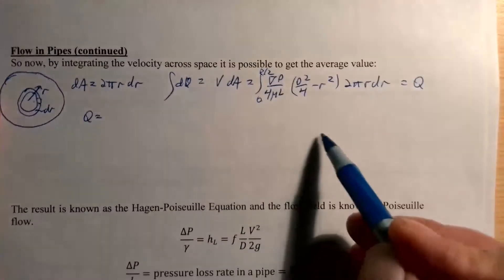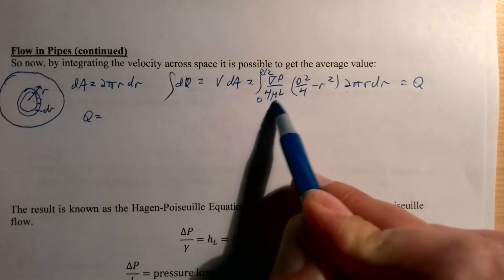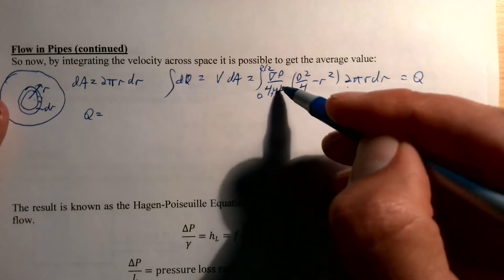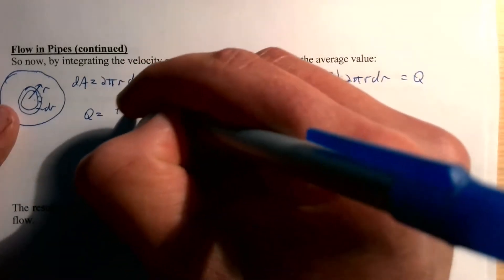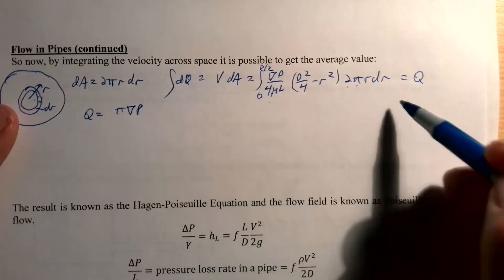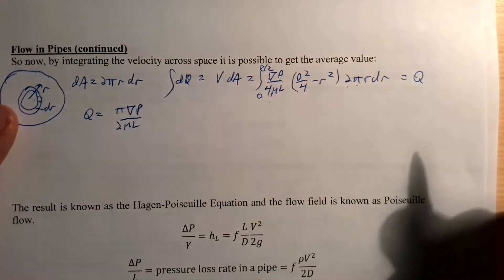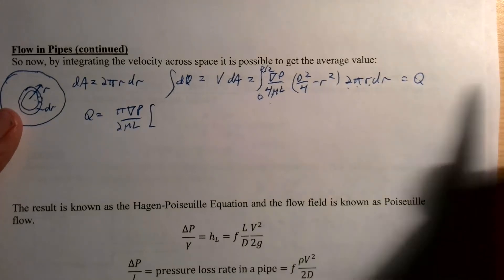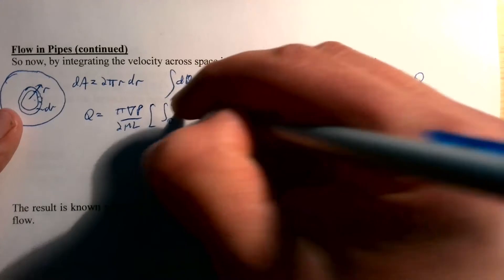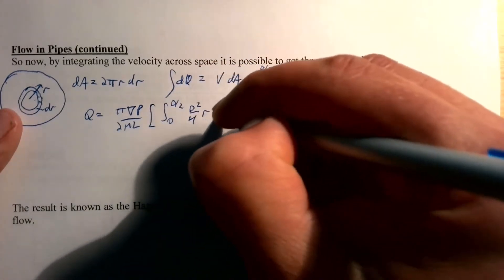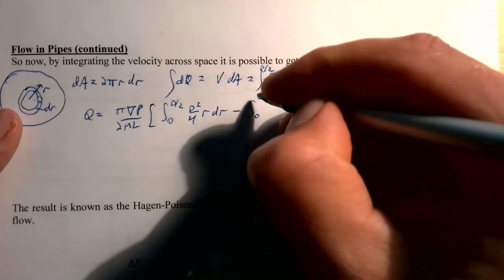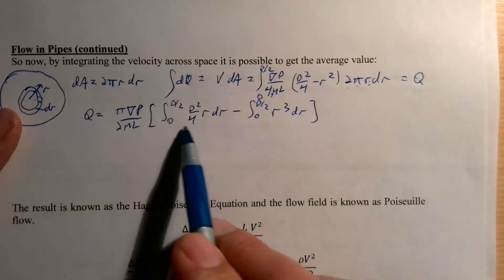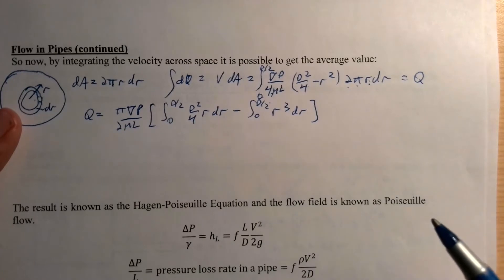Pulling the constants ΔP, μ, and L outside the integral, we get Q = (πΔP/2μL) times the integral from 0 to D/2 of (D²/4)·r·dr minus the integral from 0 to D/2 of r³·dr. We have two separate integrals to evaluate and subtract.